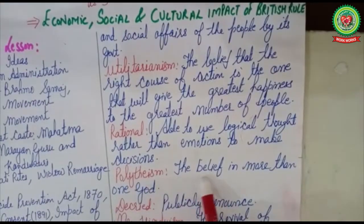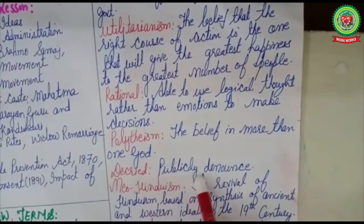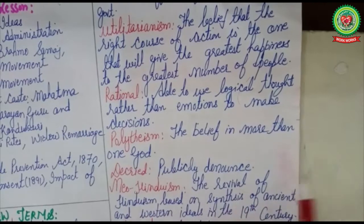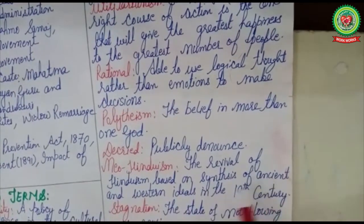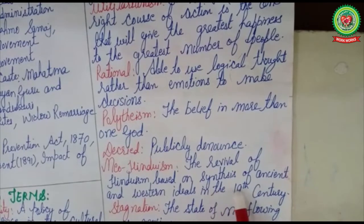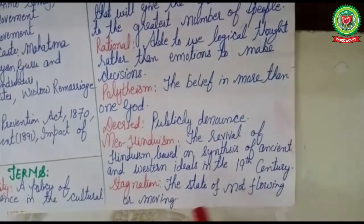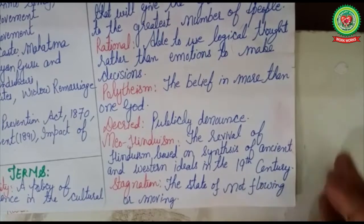Polytheism: the belief in more than one god. Decried: publicly denounced. Neo-Hinduism: the revival of Hinduism through the synthesis of ancient and western ideals in the 19th century — here synthesis means joining of ancient and western ideas. Stagnation: the state of not flowing or moving.